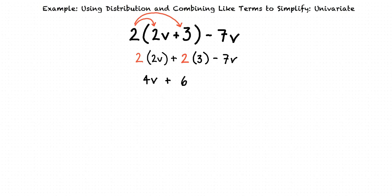So our expression now looks like this: 4v plus 6 minus 7v. Now we can simplify further by combining like terms. In this example, 4v and negative 7v are like terms.